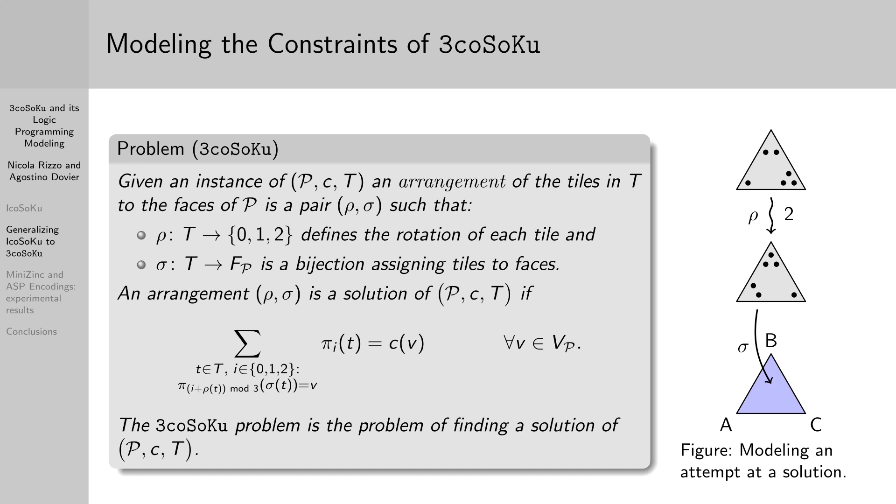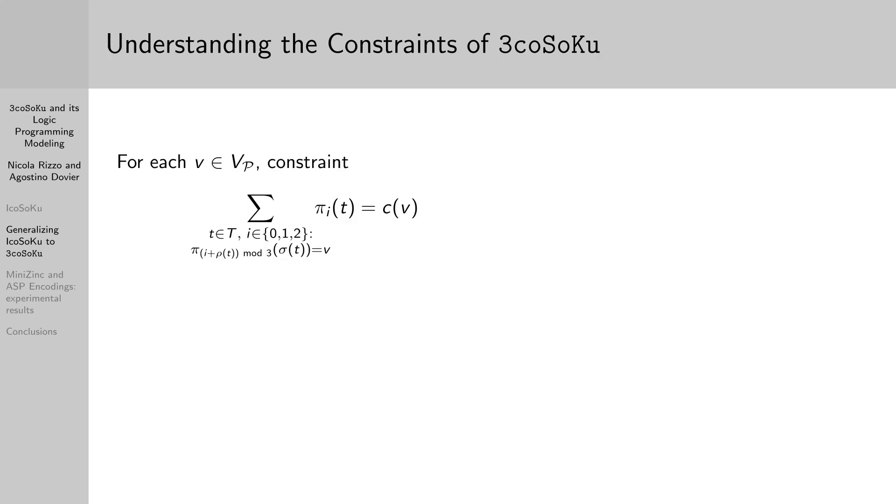I guess these constraints are not easy to read, so we can explain them a little bit in the next slide. Given a vertex v, the constraint on its left hand side considers each weight that gets placed near v. In fact, for each tile t, its weight at position i gets rotated forwards in a circular rotation by function rho, and then gets placed on a vertex.